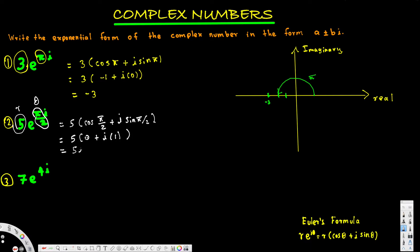Finally we end up with 5i — that's just the imaginary part. Since it's positive, we have 5 units in the positive y-axis direction. The angle that it makes from the positive x-axis is 5π/2.